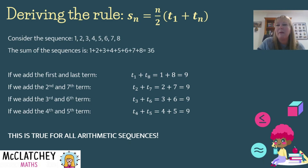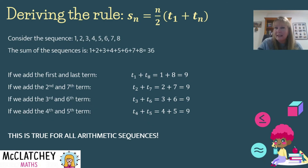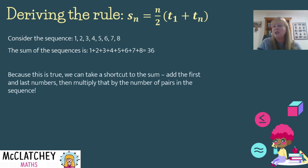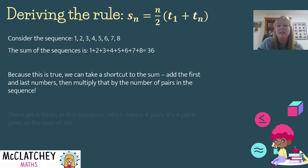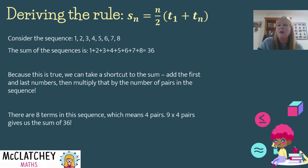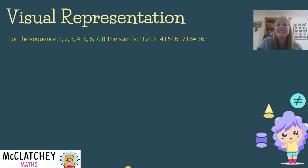Because each pair of terms always gives the same sum, we can take a shortcut: add the first and last terms, then multiply by the number of pairs. Our sequence had 8 terms, so there are 4 pairs (8 ÷ 2 = 4). So 9 × 4 = 36 — and that's how we derive the rule.